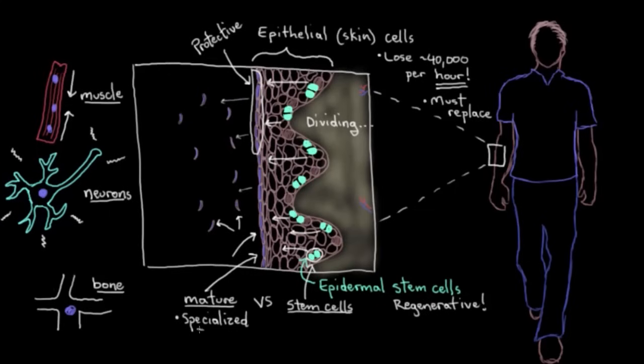So all these adult cells are already nice and specialized. They've grown up and decided what they want to do for a living. Whereas stem cells are not like that at all. Stem cells are unspecialized. But they still have a really important job, which is to give rise to our more specialized cell types, like these cells here.